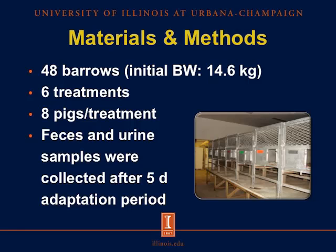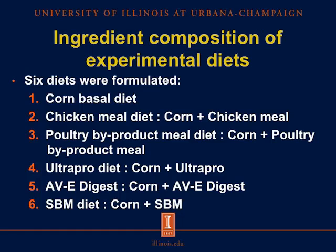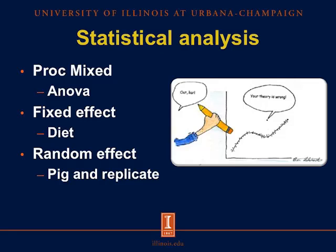For this experiment, we used 48 barrows with an initial body weight of 14.6 kilograms. We had 6 treatments and 8 pigs per treatment, and feces and urine samples were collected after a 5-day adaptation period. We formulated 6 diets. The first diet was a corn basal diet, and then for the following 5 diets, we mixed the corn basal diet with each of the test ingredients: chicken meal, poultry by-product meal, ultra-pro, ABE digest, and soybean meal. For statistical analysis, we used the PROC MIXED procedure of SAS. The fixed effect was diet, and the random effects were pig and replicate.